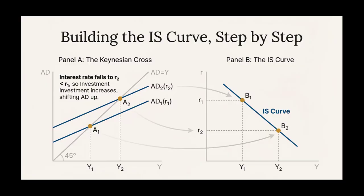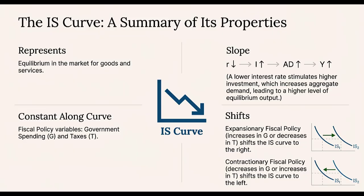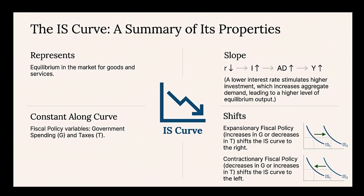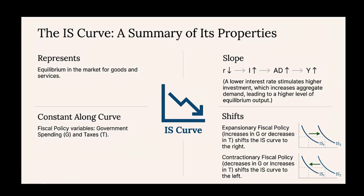Investment is the absolute key behavioral link here. The core assumption is that planned investment — think new factories, new equipment — is negatively dependent on the interest rate. The interest rate is essentially the cost of borrowing. So if interest rates are high, that hurdle for a project to be profitable is also really high; a lot of potential projects just won't get off the ground. To derive the IS curve, we trace the logic: if the interest rate goes down, borrowing gets cheaper, planned investment goes up, and that increase in investment is a direct stimulus into the economy — it boosts aggregate demand. Because output has to match demand, a higher aggregate demand means a higher equilibrium level of output. A lower interest rate leads to a higher level of output. That's the inverse relationship defining the IS curve — it slopes downward. Every single point along that curve is a combination of an interest rate and an output level where the goods market is perfectly in balance.